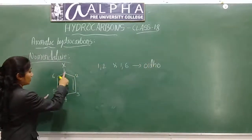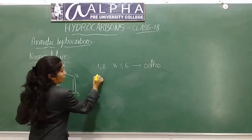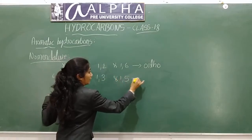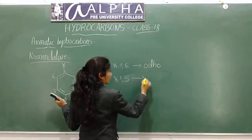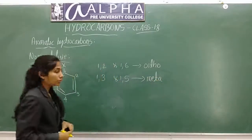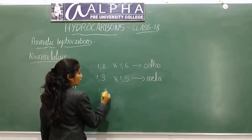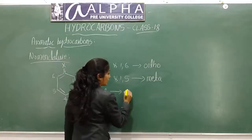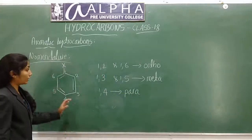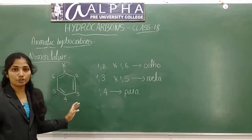Positions 1,3 and 1,5 are called meta positions. Position 1,4 is called the para position. So we have three positions: ortho, meta, and para. Depending on the position in which the other group is present, we name the compound differently.